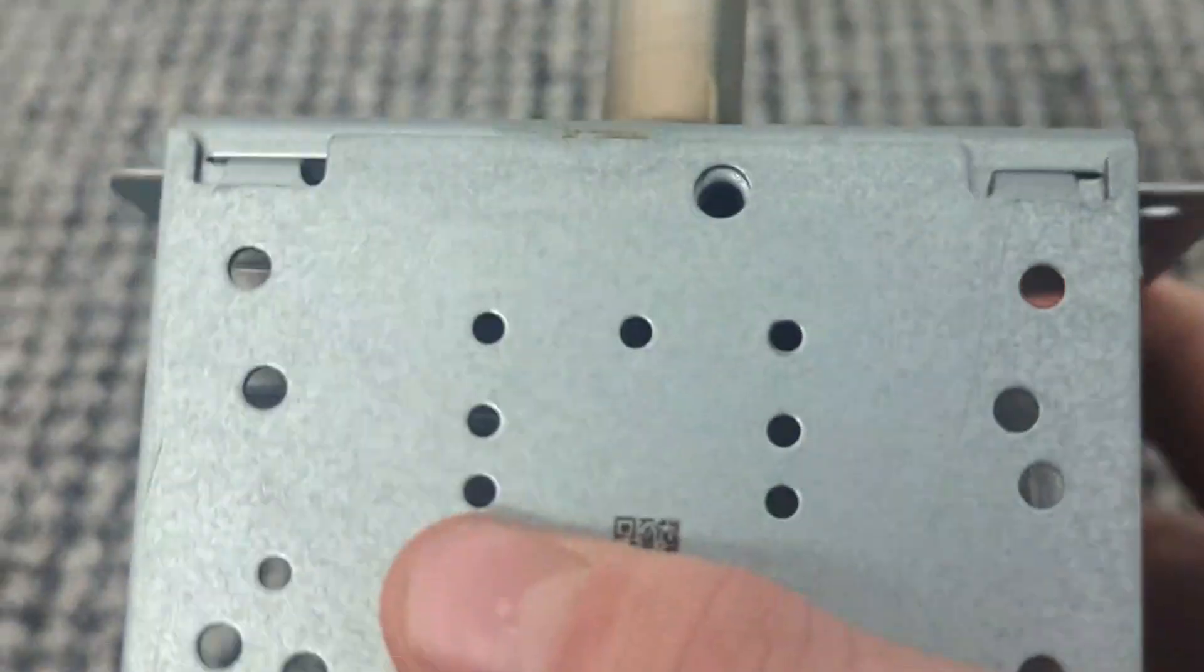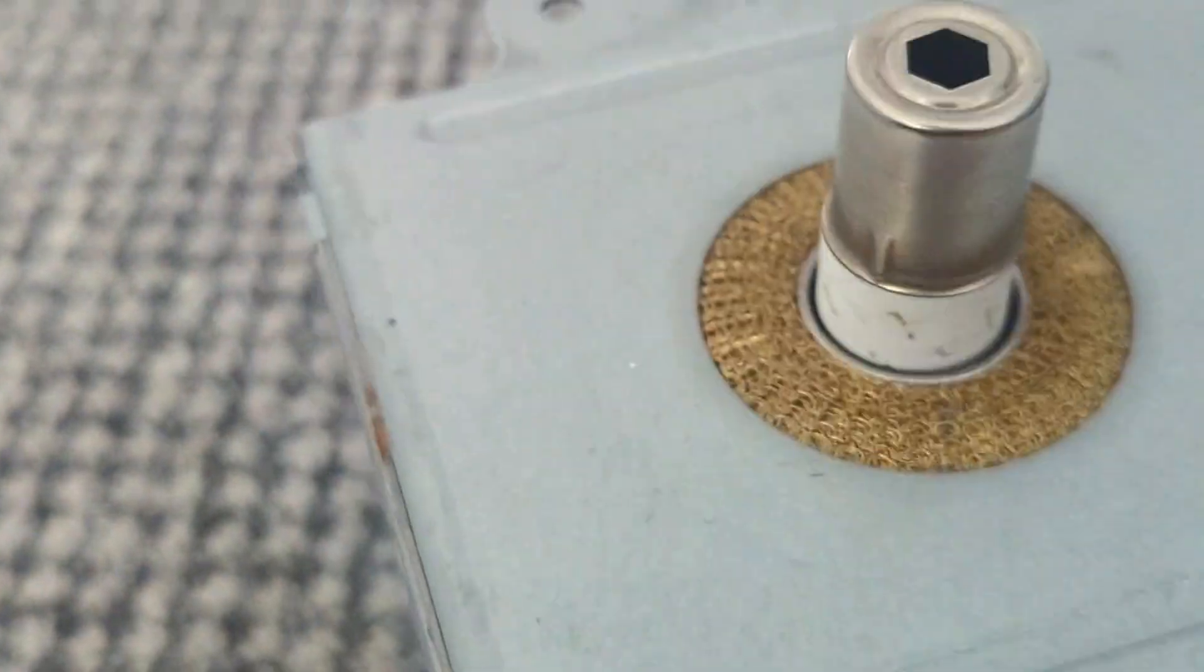Some magnetrons, such as this one, has a QR code that you can scan and that's the serial number.